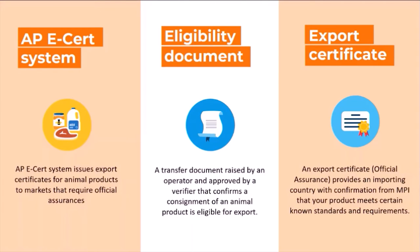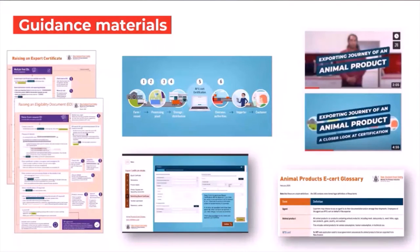If you're wondering how to know if you need an export certificate, you need to look at the Overseas Market Access Requirement documents, known as OMARs for short, as that will specify whether you need to get an export certificate. In some cases, if it's not clear whether you need an export certificate, the next best step is to contact your importer in your destination market or get in touch with the market access team here at MPI.